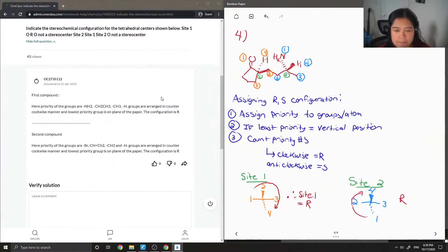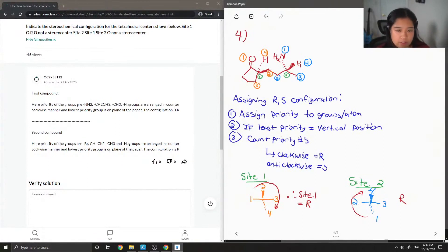Okay, so let's see the junior tutor's answer. Here the priority groups are NH2, ethyl, methyl, H. Counterclockwise configuration is R. So they got the same configuration. The reason they said that it goes in a counterclockwise matter is because it depends on where you put your least priority, like what position you put it in.